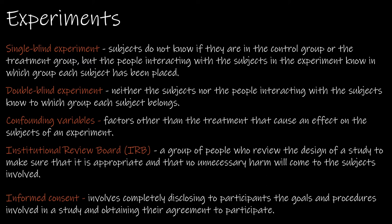A confounding variable is a factor other than the treatment that causes some sort of effect on the subjects of the experiment. For instance, if we're measuring cholesterol with a control group on a placebo and a treatment group on a cholesterol-reducing medication, confounding variables would include things like the subjects' diet or hereditary factors — things at play that aren't being measured. When designing an experiment, your job is to identify those confounding variables and try to reduce their effect.